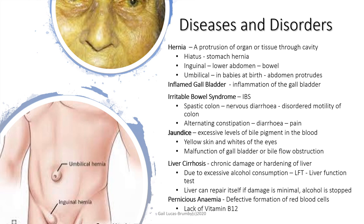An inflamed gallbladder is inflammation of the gallbladder. Irritable bowel syndrome (IBS) is a generic term for bowel-related conditions — often a spastic colon causing nervous diarrhoea, a disorder of the motility of the colon with alternating constipation and diarrhoea, pain and bloating. Jaundice is excessive levels of bile pigment in the blood, causing the skin and whites of the eyes to turn yellow. This is usually a malfunction of the gallbladder or obstruction of bile flow from the liver.